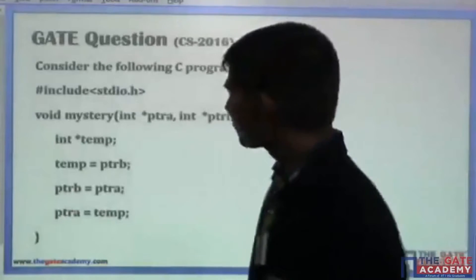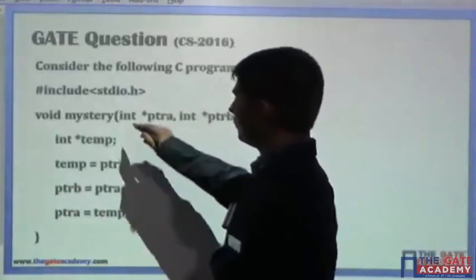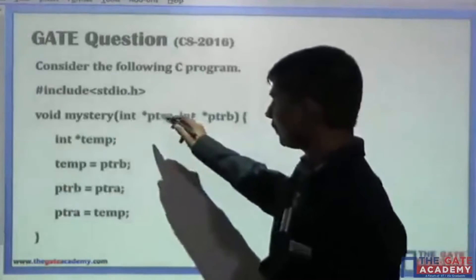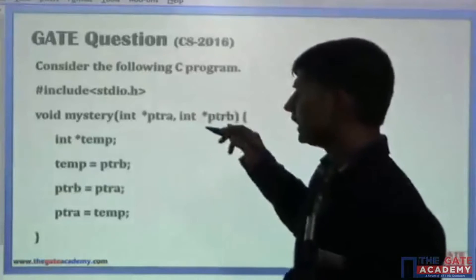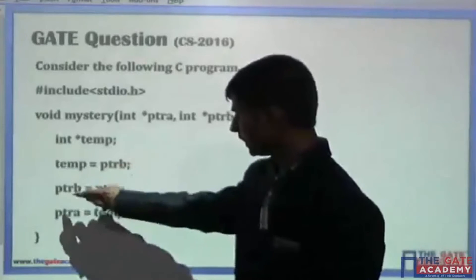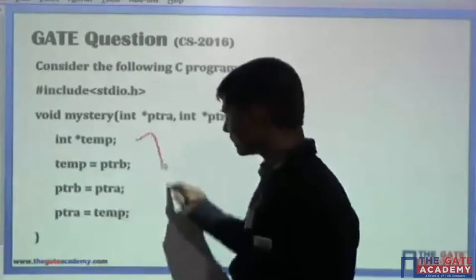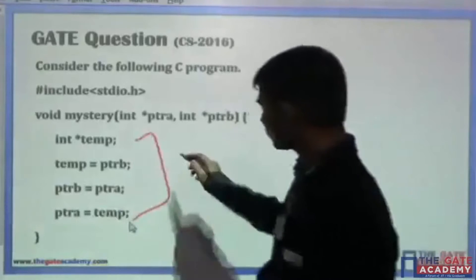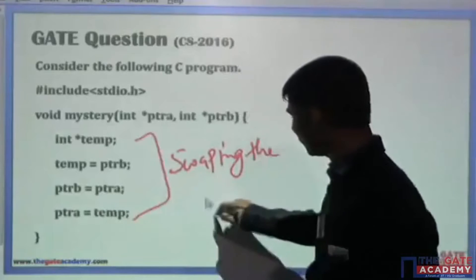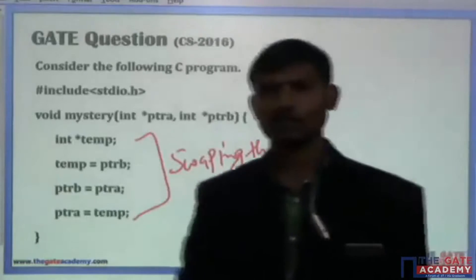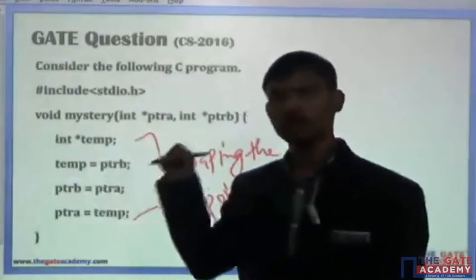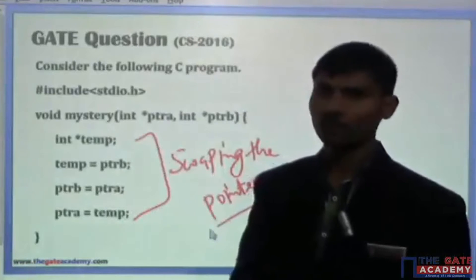This is a C program with a function called 'mystery'. This function accepts two arguments: two pointers to integers, ptrA and ptrB. A temporary pointer called temp is also used. The function stores ptrB into temp, sets ptrB equal to ptrA, and sets ptrA equal to temp. This means it is swapping the pointers — not the content — because we are not accessing the memory locations, just swapping the local pointers.